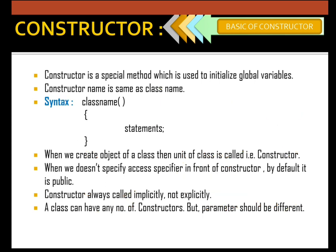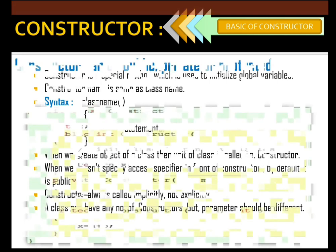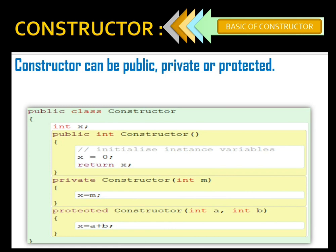Keep in mind that the constructor is the only thing which is called implicitly, not explicitly. One more thing: a class can have any number of constructors — it is not restricted to only one. We can have any number, but the parameters should be different. Also, a constructor can be public, private, or protected. We can use any access specifier with the constructor.